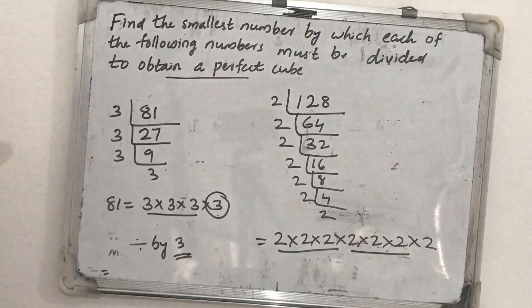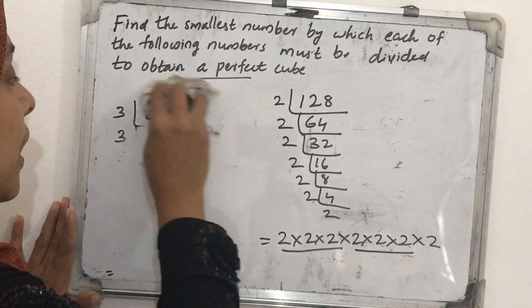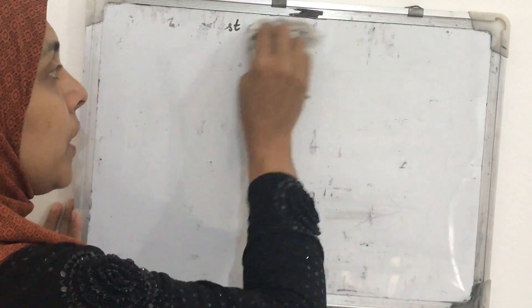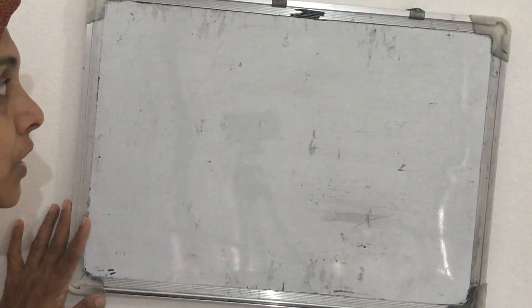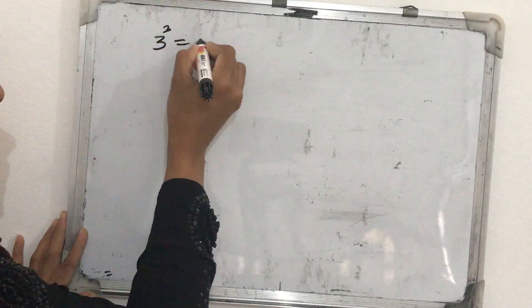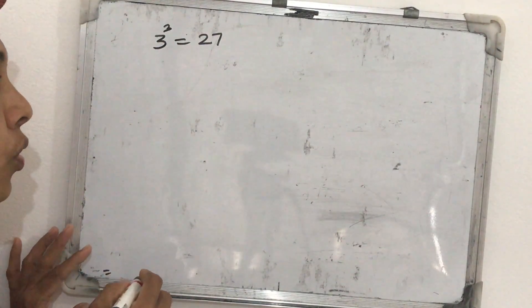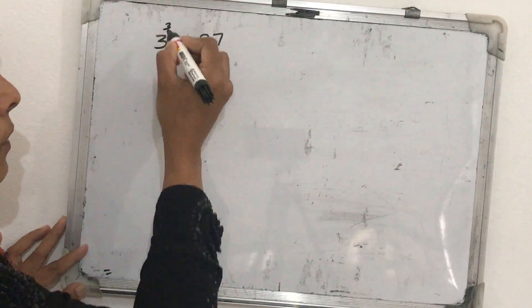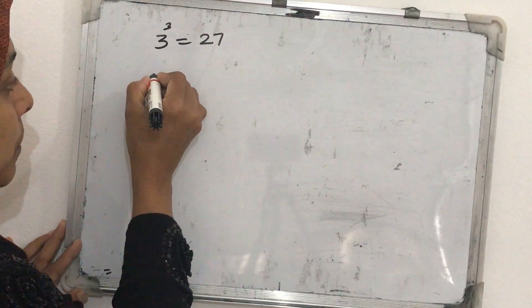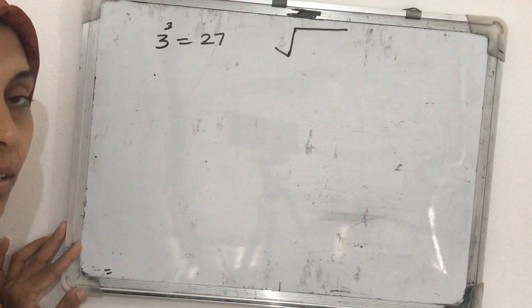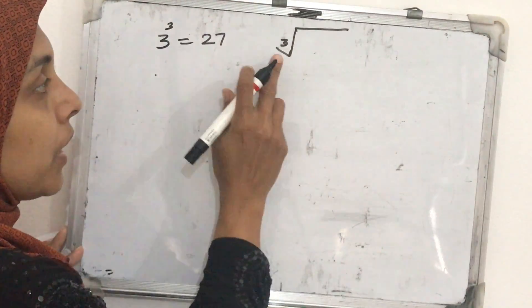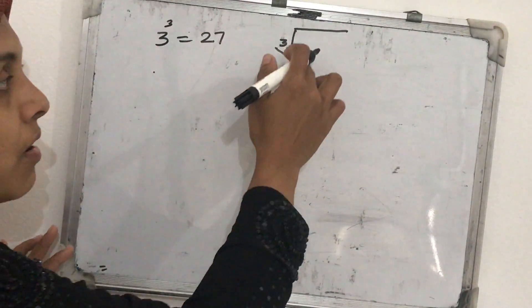Next we discuss cube roots. Just like square roots, the cube root is the inverse operation of cubing. The symbol for cube root is the same as the square root symbol but with a small 3 written in it. This is called a cube root.